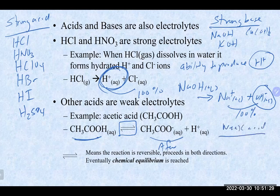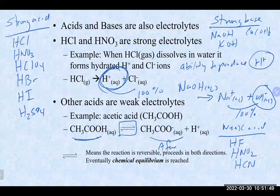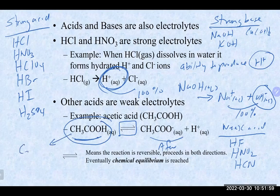Other common weak acids include hydrofluoric acid (HF), nitrous acid (HNO₂), and hydrocyanic acid. Acetic acid is essentially the go-to example for a weak acid. Note that acetic acid is sometimes written as C₂H₄O₂ — that is the same compound.